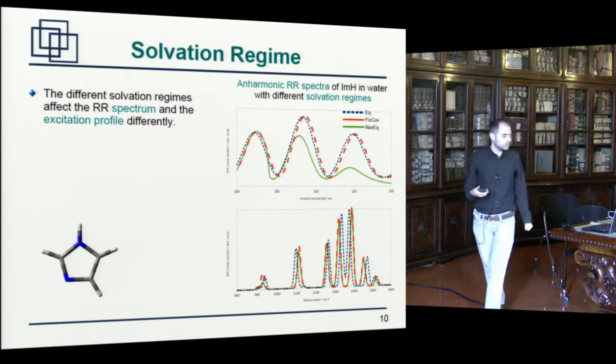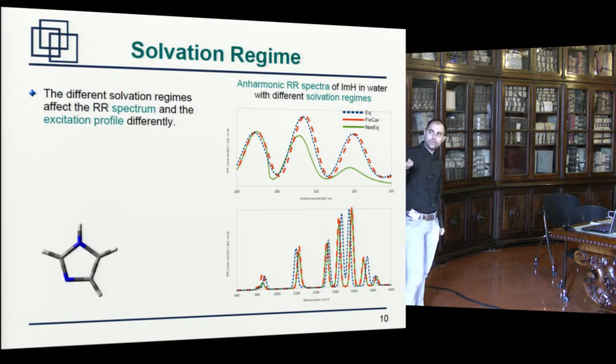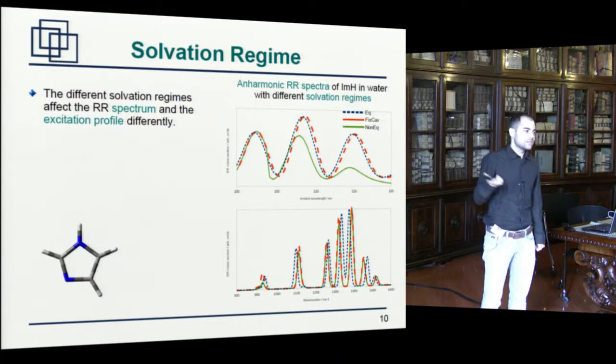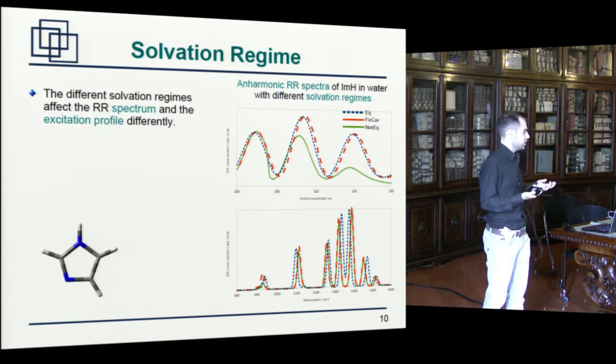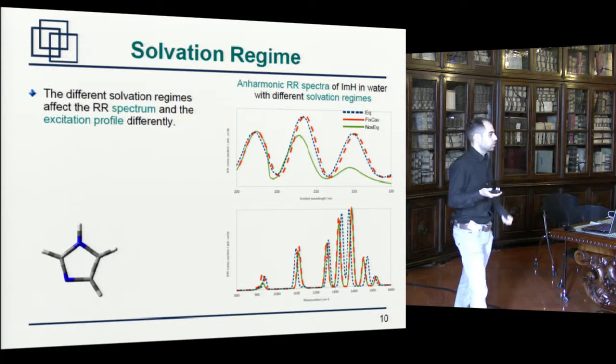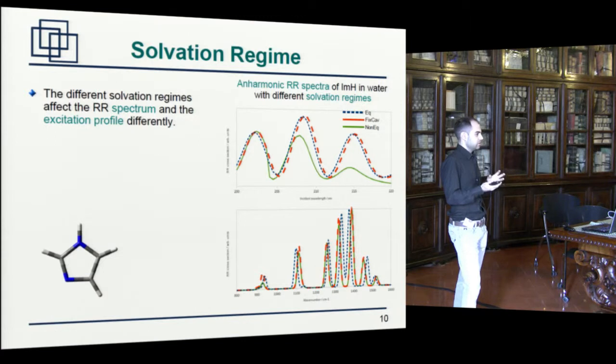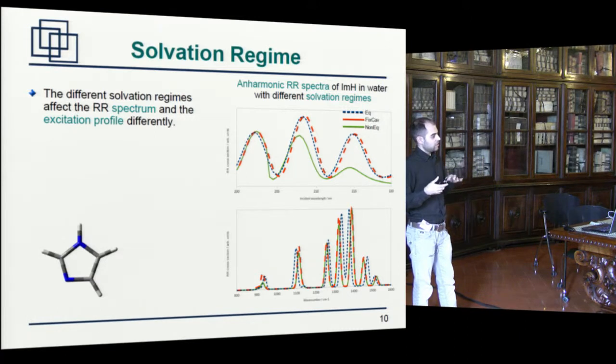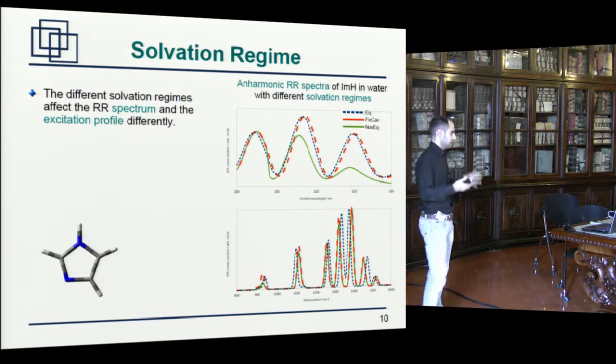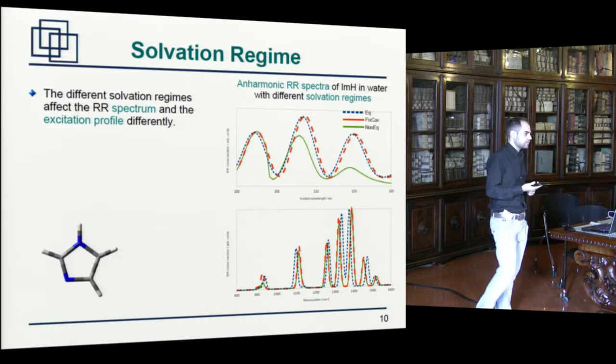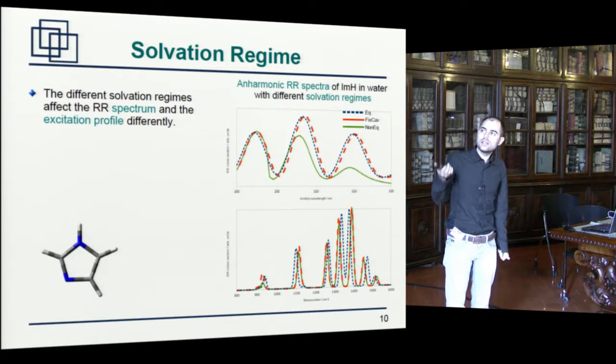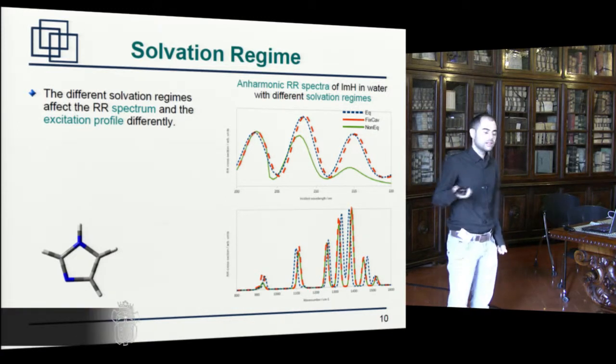So let's go to the results for the same molecule in this test case. I show the excitation profile above and the Raman spectrum below. So the blue dashed line is a solvent which is fully at equilibrium with the solute. The orange dashed line is what we call the fixed cavity, where the cavity in which the molecule is placed is kept fixed. And then the green line is spectra obtained with a solvent nuclear degrees of freedom fixed, while the electronic ones are allowed to equilibrate with the solute, essentially, without going too much into detail.